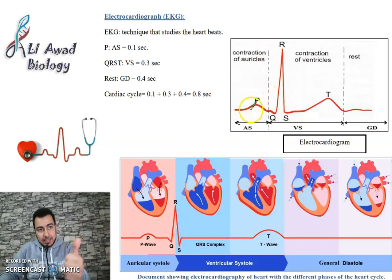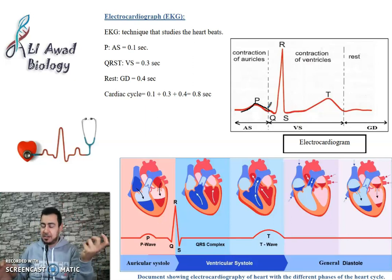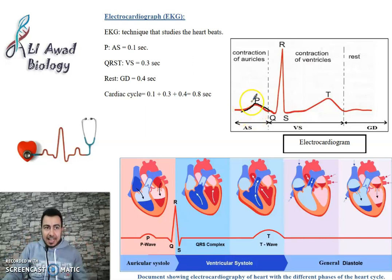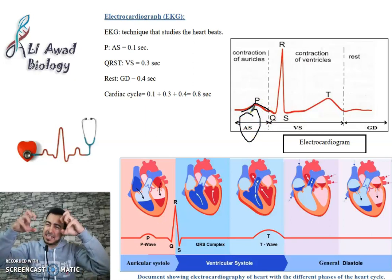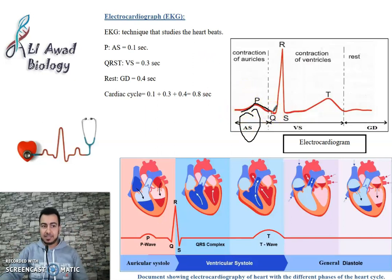P represents electrical activity — you can see a small rise here, meaning there is electrical activity, meaning contraction. The heart contracts in two stages: auricular systole or ventricular systole. This small P wave is the auricular systole — contraction of the auricles. Auricular contraction is relatively weak, so the electrical signal is not very high.